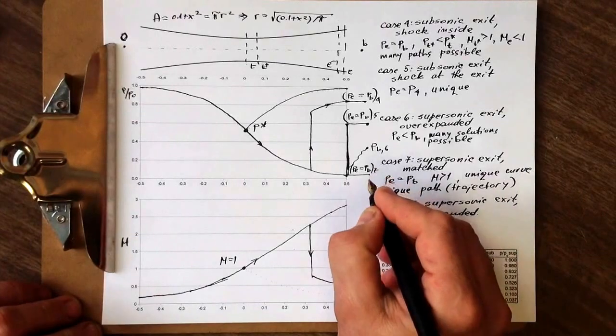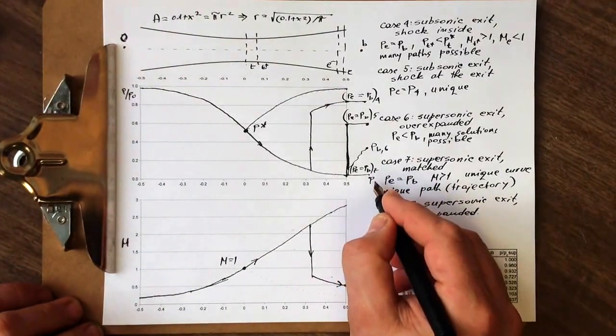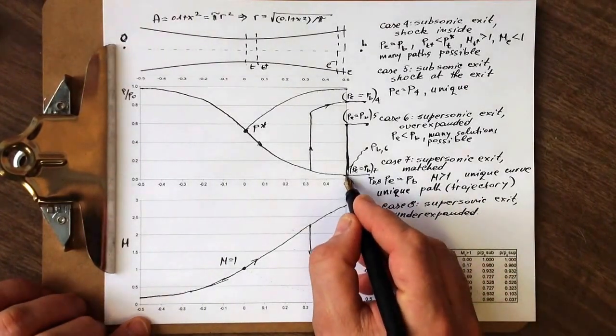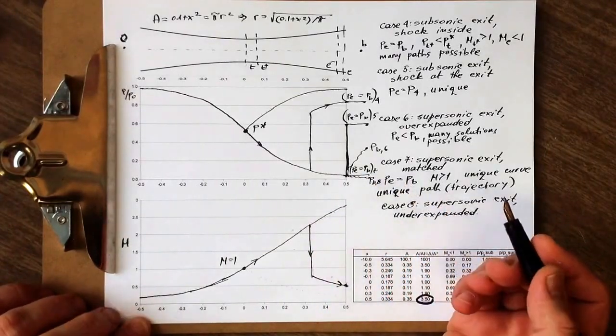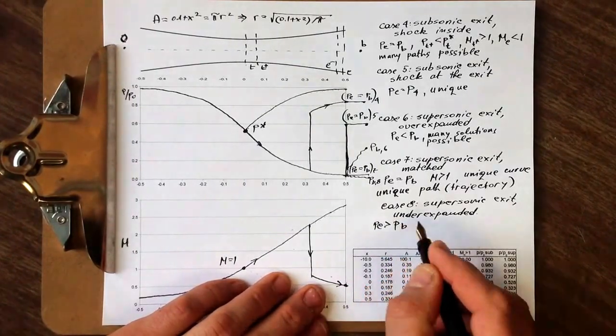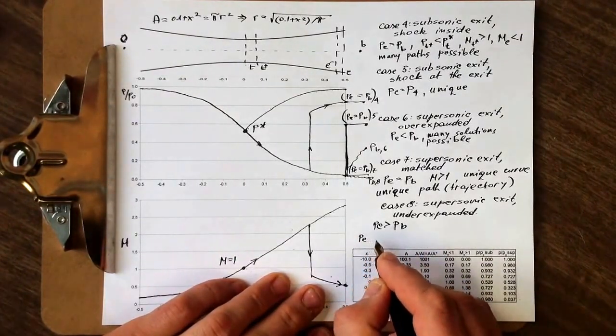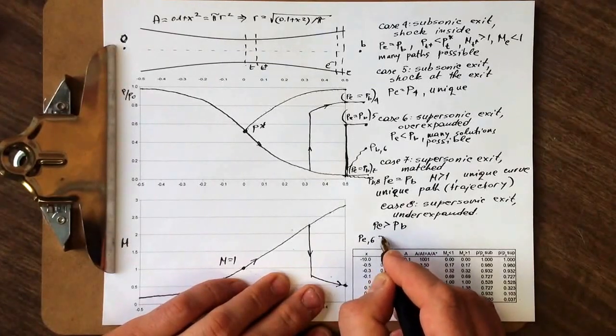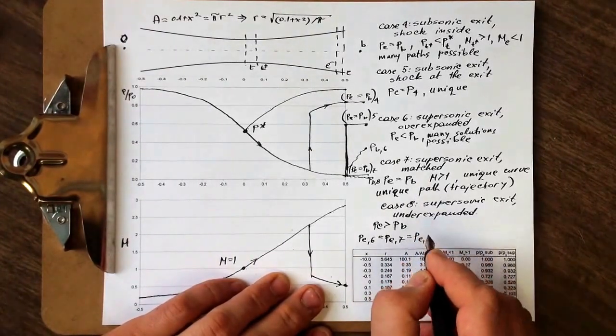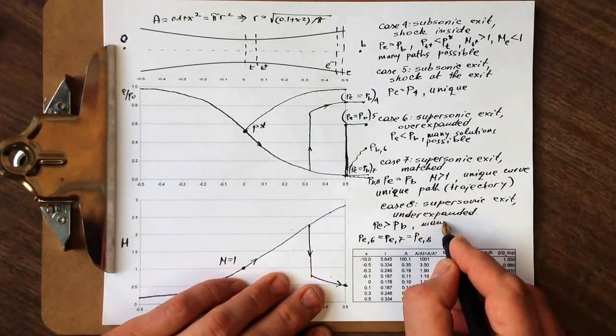And opposite to that, finally in case 8, which cannot be in this case much below 7, but a little bit, so PB8. We have the case of underexpanded nozzle. Again, the exit pressure is still the same as PB7, so we have now PE larger than PB. And we also can say that PE6 equals PE7 equals PE8. And we can also say that with case 8, many solutions are possible.